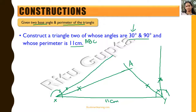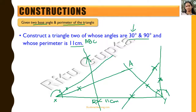We draw the perpendicular bisector of AX. Where this perpendicular bisector meets XY is point B. Similarly, we draw the perpendicular bisector of AY. Where this perpendicular bisector meets XY is point C. We join A to B and A to C to get the required triangle.